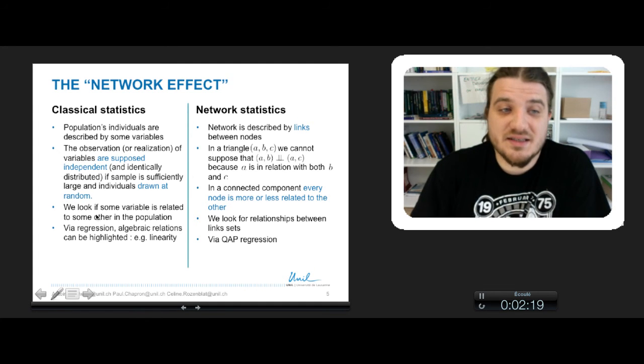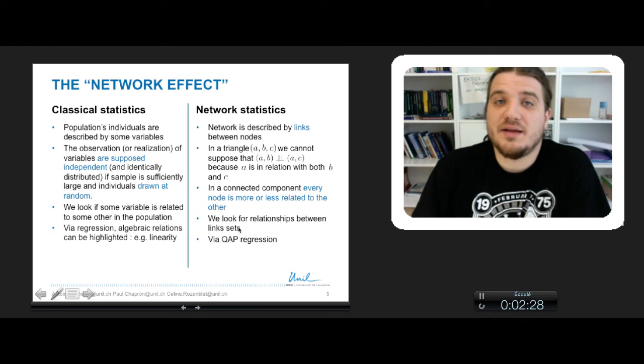So in classical statistics, you look at some variable and how it is related to some other in the population, and you make some regression to find a linear combination and so on. And basically QAP will allow us to do the same thing, to look for relationship between links of some networks. And you can also make some regression with QAP regression.